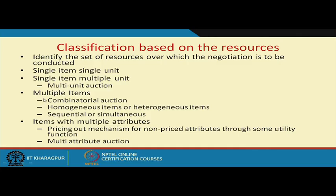For example, a biscuit company trying to buy 100 quintals of sugar through auction — same item, multiple units. Then you can have multiple items, where different items are being bought or sold together. When you try to buy multiple items together, this particular kind of auction is called a combinatorial auction. It can be made more complex with multiple items and multiple units — this is called a multi-unit combinatorial auction.